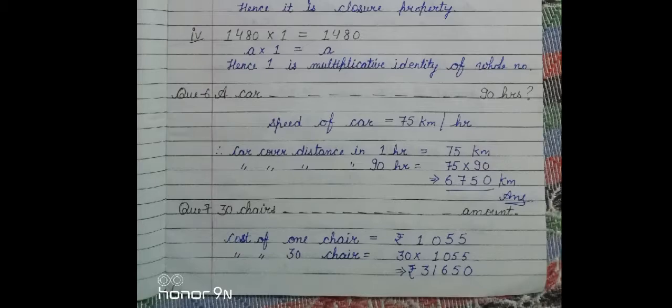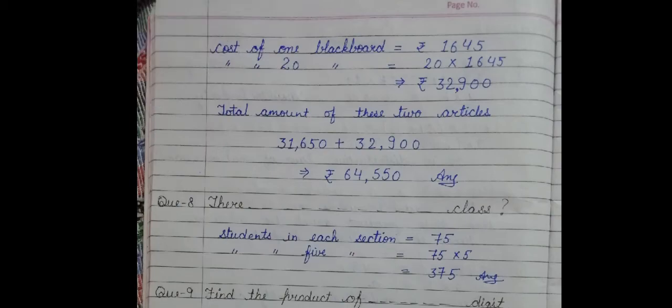Next question we have. Thirty chairs and twenty blackboards were purchased for a school. If each chair costs 1,055 rupees and each blackboard costs 1,645 rupees, find the total amount. Cost of one chair is 1,055 rupees. So, 30 chairs multiply by 30 will get answer thirty-one thousand six hundred fifty. Similarly, cost of one blackboard is this and cost of 20 blackboards, multiply by 20 will get our answer thirty-two thousand nine hundred. Total amount we sum up and get our answer.